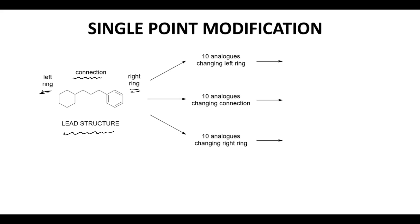We could think of 10 changes to the other parts as well. If we made all possible combinations, we'd make 10 times 10 times 10, a thousand different analogs of our lead structure. That's a lot.